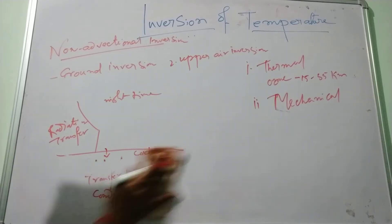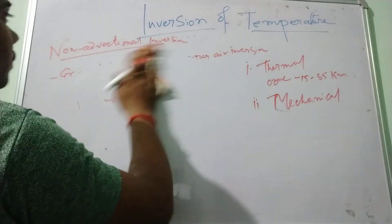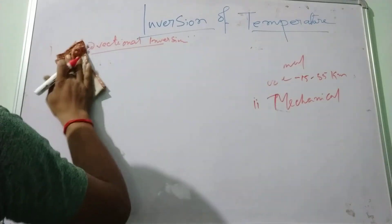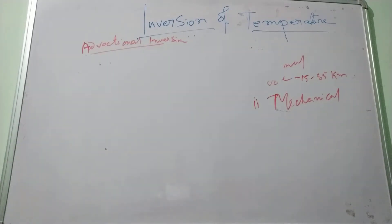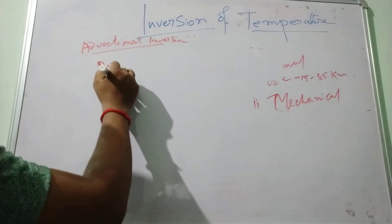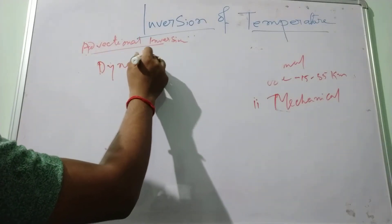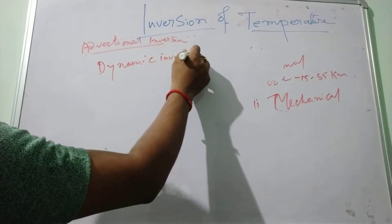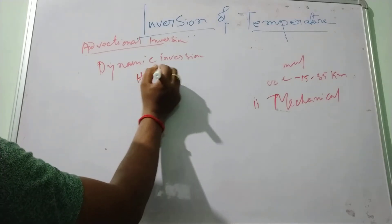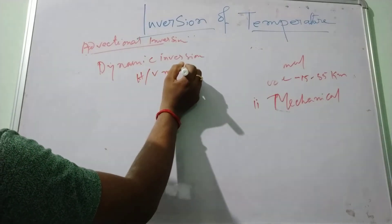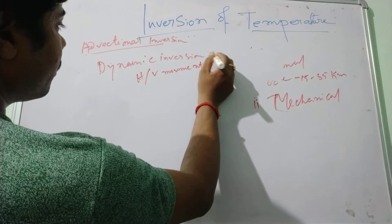Now coming to the advectional temperature inversion. This advectional temperature inversion is also known as dynamic inversion, because it is always caused due to either the horizontal or vertical movement of air.